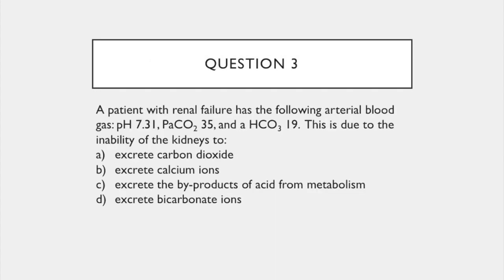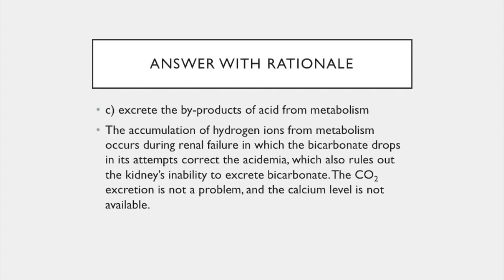Question 3. A patient with renal failure has the following arterial blood gas: a pH of 7.31, PaCO2 of 35, and HCO3 of 19. This is due to the inability of the kidneys to excrete hydrogen ions. The accumulation of hydrogen ions from metabolism occurs during renal failure, in which the bicarbonate drops in its attempt to correct the acidemia. This rules out the kidneys' inability to excrete bicarbonate. The CO2 excretion is not a problem, and the calcium level is not available.